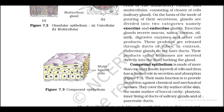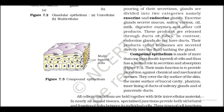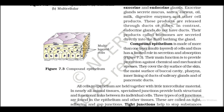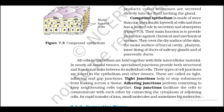In contrast, endocrine glands do not have ducts; their products called hormones are secreted directly into the fluid bathing the gland. Compound epithelium is made of more than one layer of cells and has a limited role in secretion and absorption (figure 7.3). Its main function is to provide protection against chemical and mechanical stresses. It covers the dry surface of the skin, the moist surface of the buccal cavity, pharynx, and inner lining of ducts of salivary and pancreatic glands.